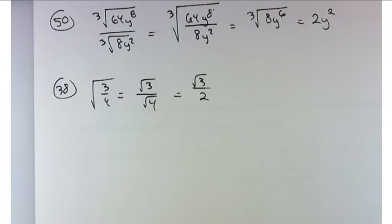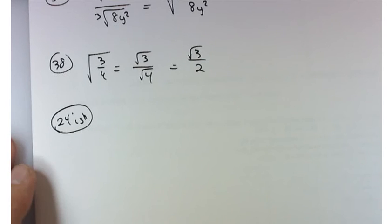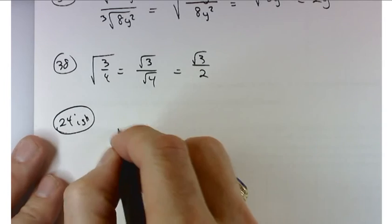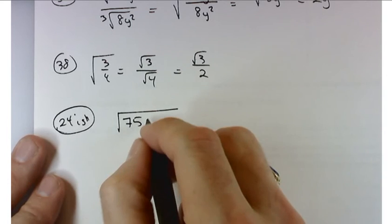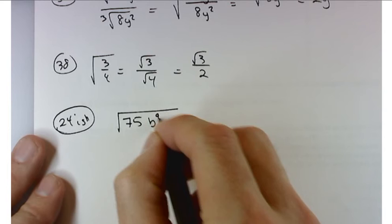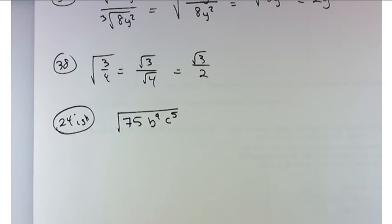Which one? How about if I do problem 24? Better yet, let's see. We'll do problem 24 and I'll bump it up a little bit to make it similar to 23. So problem 24-ish. I'm going to change it a little bit just to make it a little bit more challenging. Square root of 75, a, b to the, let's see, b to the 9th, and c to the 5th.